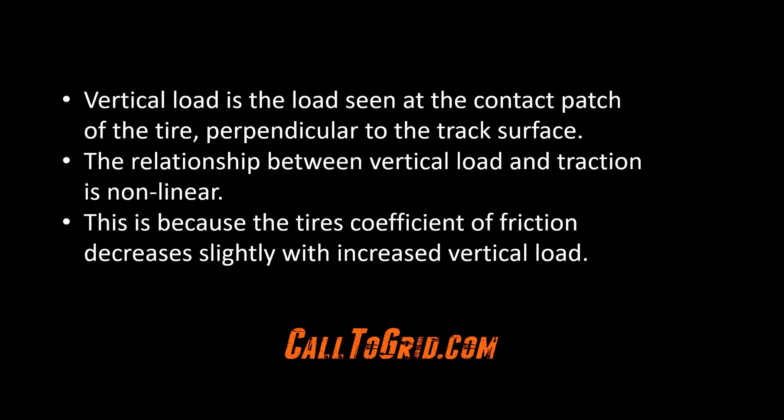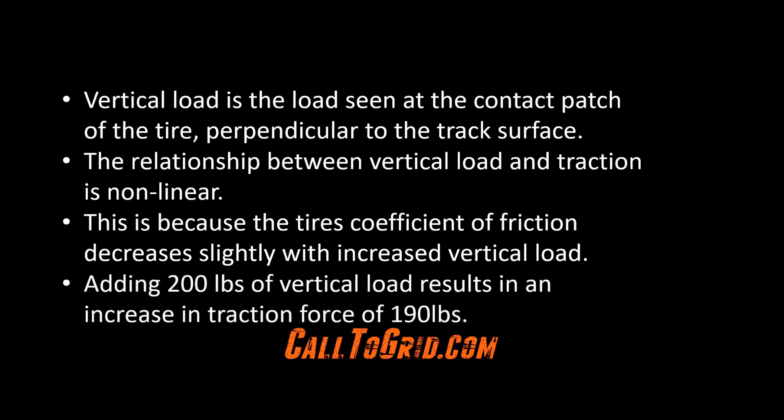If we add 800 pounds to the weight of a car with 200 pounds of increased vertical load at each tire, it is obvious the car won't accelerate as fast with the engine and horsepower remaining the same. Also, this additional 200 pounds of vertical load to the tire does not mean 200 pounds of cornering force. Because of the drop in the coefficient of friction, only about 190 pounds of cornering force will be generated.